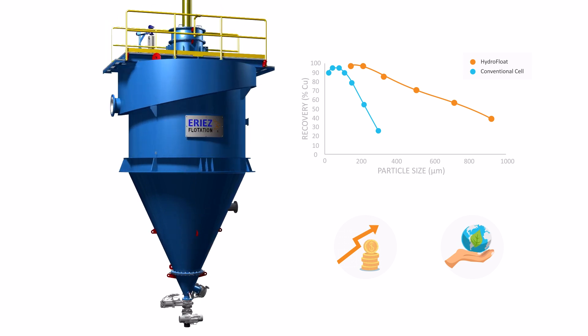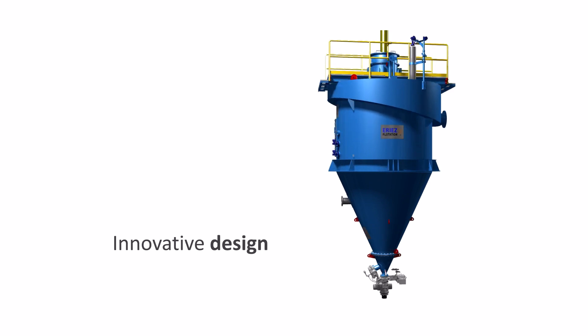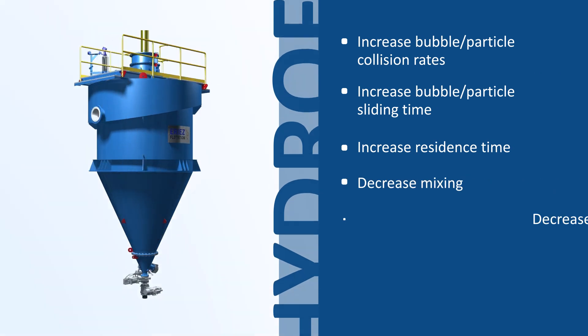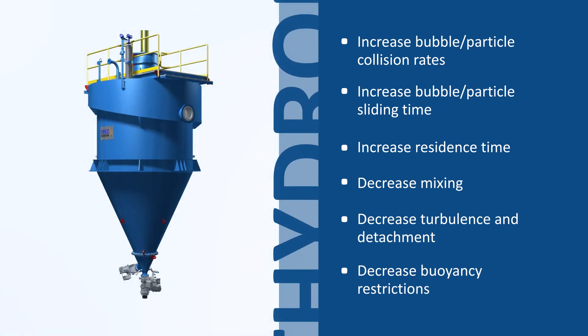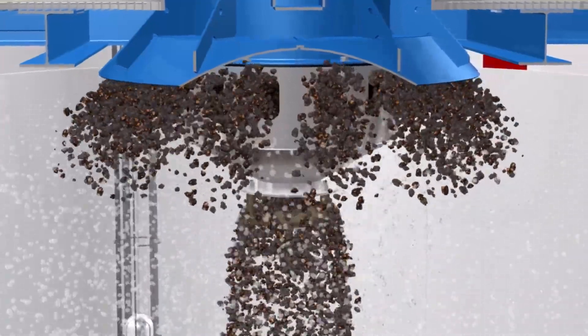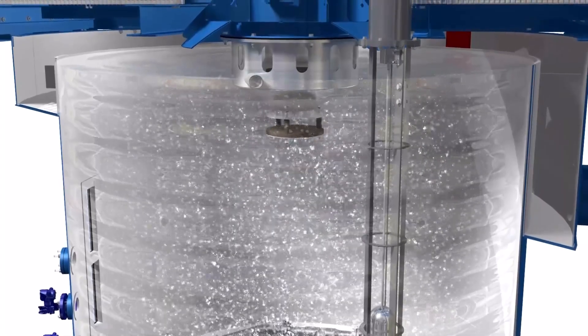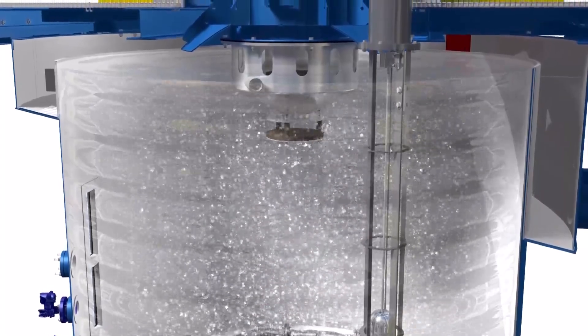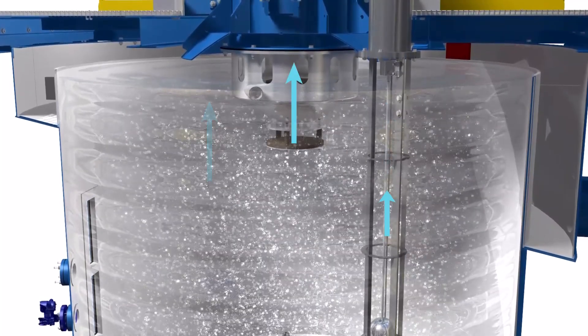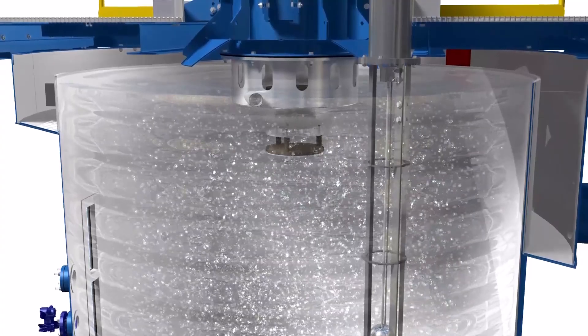The improvement in coarse particle recovery is due to the innovative design of the Hydrofloat. The Hydrofloat operates with the feed particles settling against an upward current of fluidization water, which creates a fluidized bed of particles. The fluidization water is uniformly distributed across the bottom of the separation chamber through a custom-engineered piping manifold.